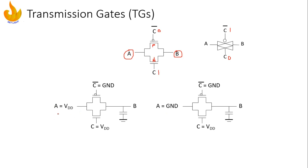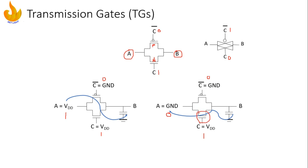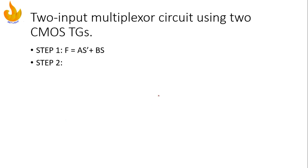For logic 1: A is VDD, C is VDD, and C-bar is ground, so the transmission gate is turned on. Logic 1 is transferred to B via the PMOS transistor because PMOS passes a strong 1. For logic 0: A is 0, C is 1, and C-bar is 0, so the transmission gate is again turned on and there is a path via the NMOS transistor because NMOS passes a strong 0. This is how a transmission gate is beneficial.